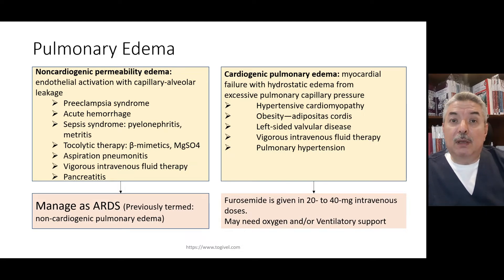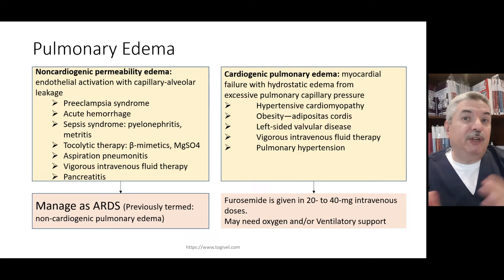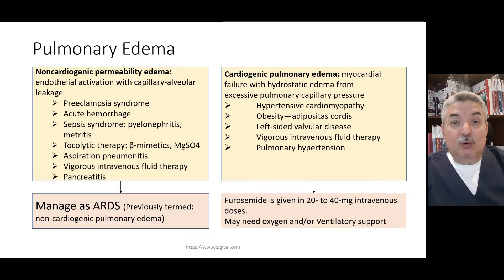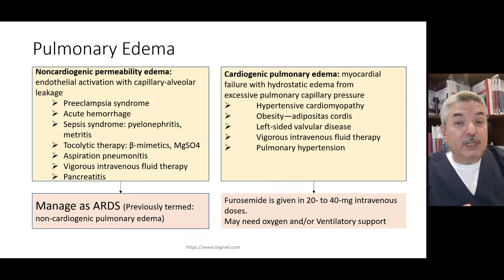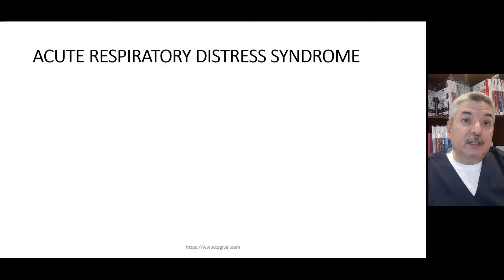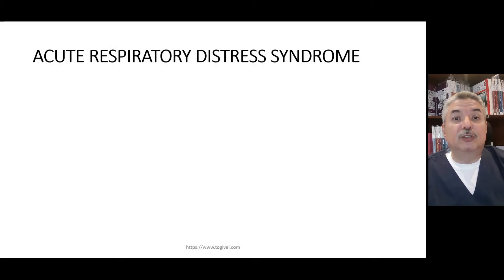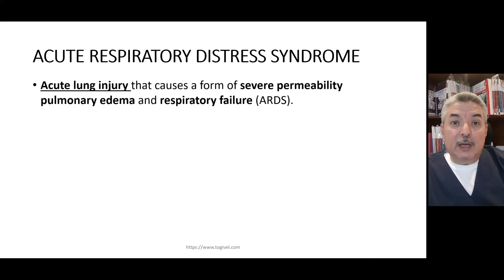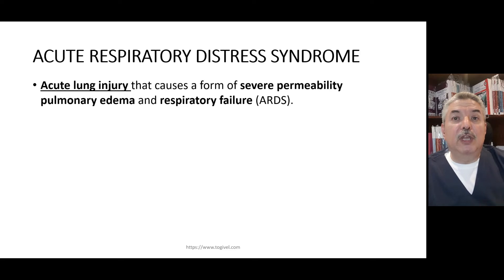The need for ventilation is not as frequent as in adult respiratory distress syndrome. If there is pulmonary edema, you must differentiate: is it cardiogenic or non-cardiogenic? If non-cardiogenic, this is acute respiratory distress syndrome — also called adult respiratory distress syndrome, or by the old terminology, non-cardiogenic pulmonary edema, also called acute lung injury.